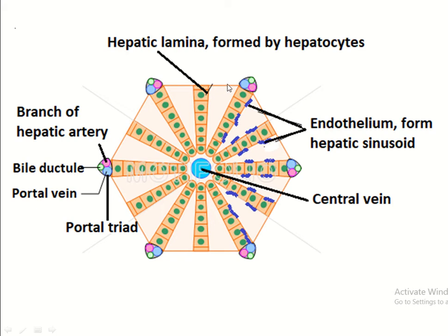The classical hepatic lobule is characterized by a hexagonal shape. The center contains the central vein, and radiating outward from it are the hepatic laminae.